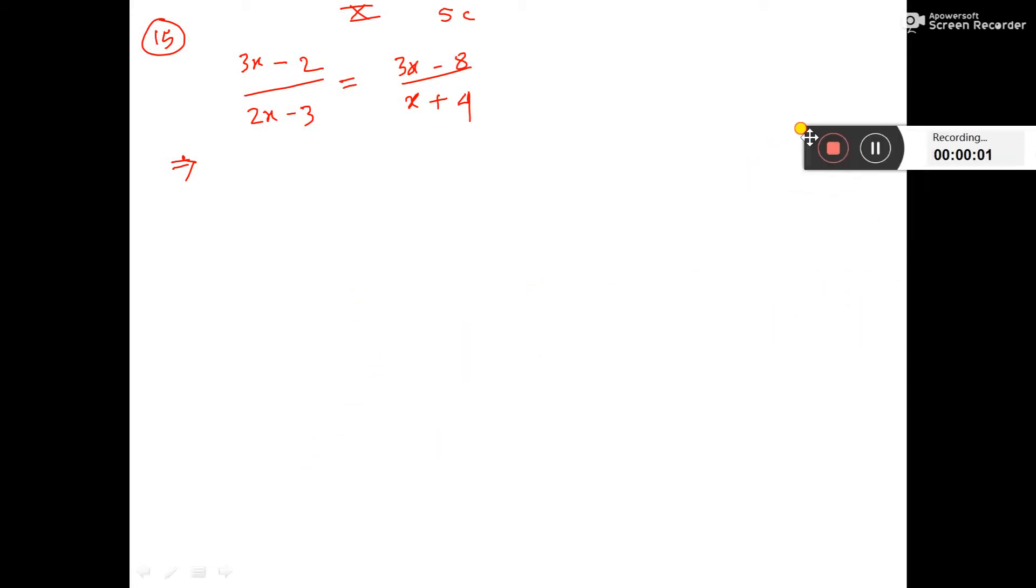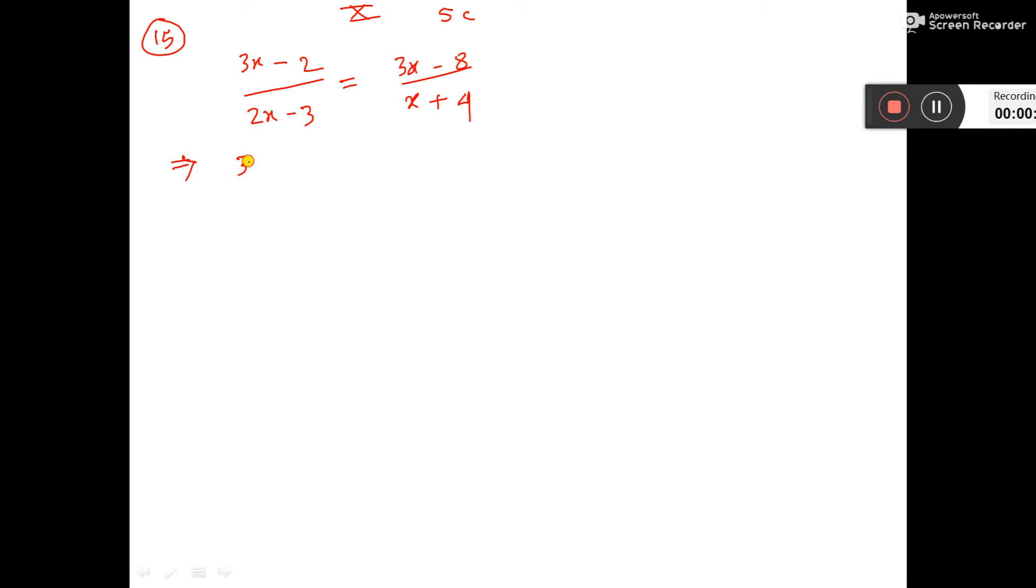Cross multiplication, that means these two first you multiply, 3x minus 2 into x plus 4, then these two you multiply, 3x minus 3 into 3x minus 8.